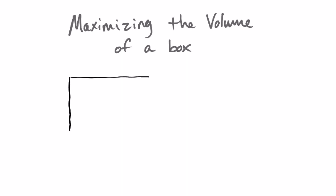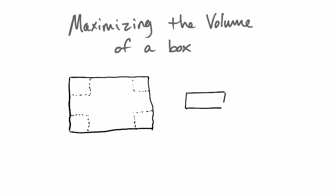If I create a rectangular piece of paper, and if I want to make a box, what I want to do is cut out four equal squares from the corners. When I cut out these squares, I could fold the box into a shape that looks like this. I would fold it up and it would have an open top.